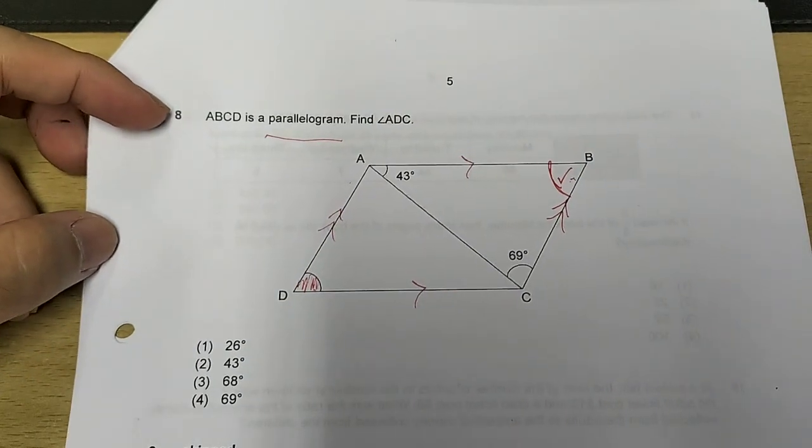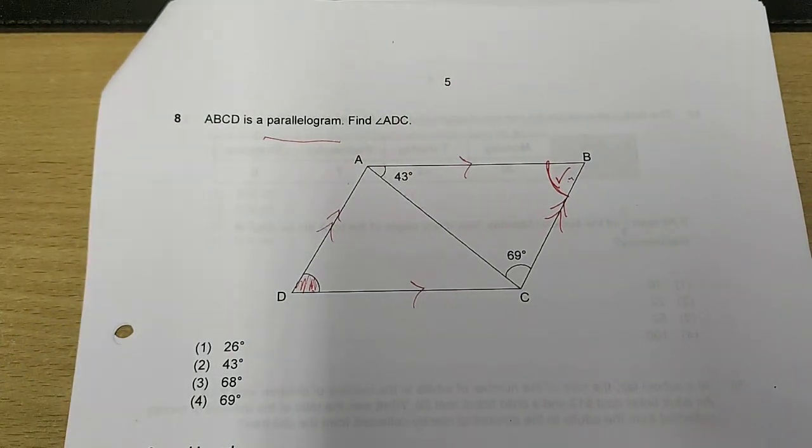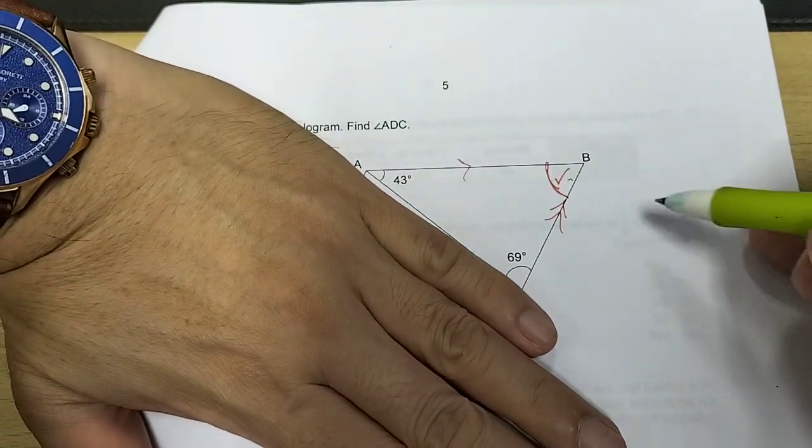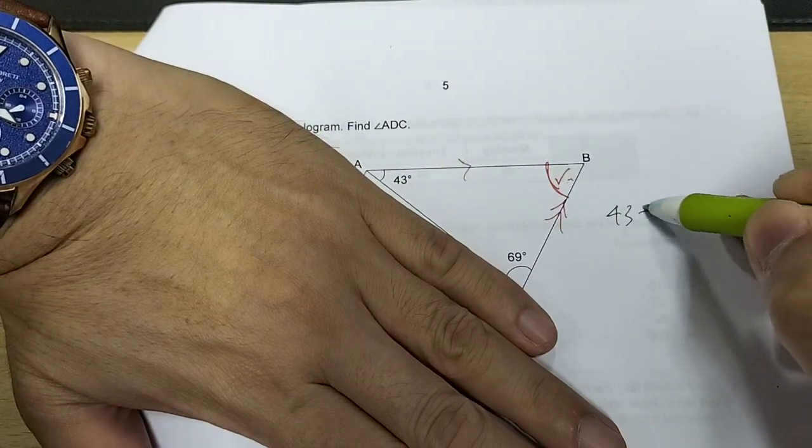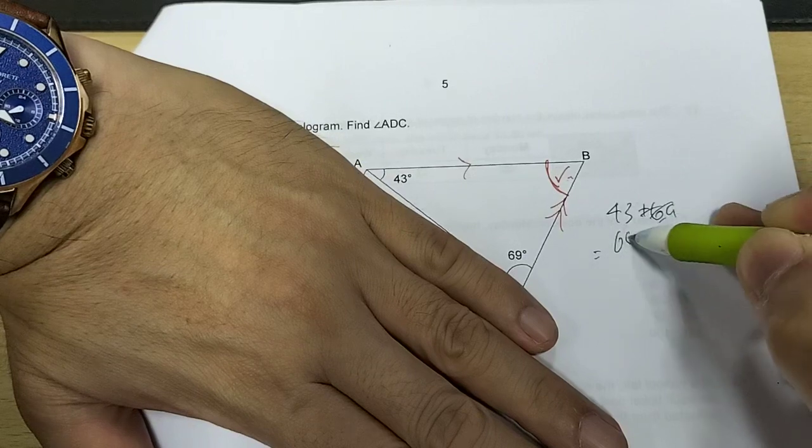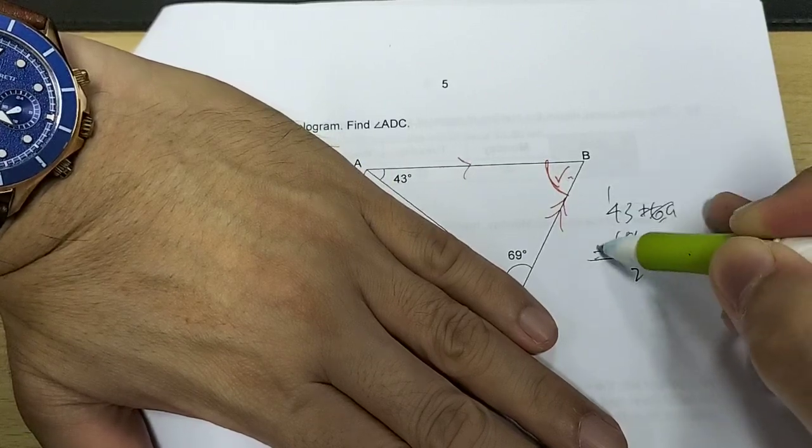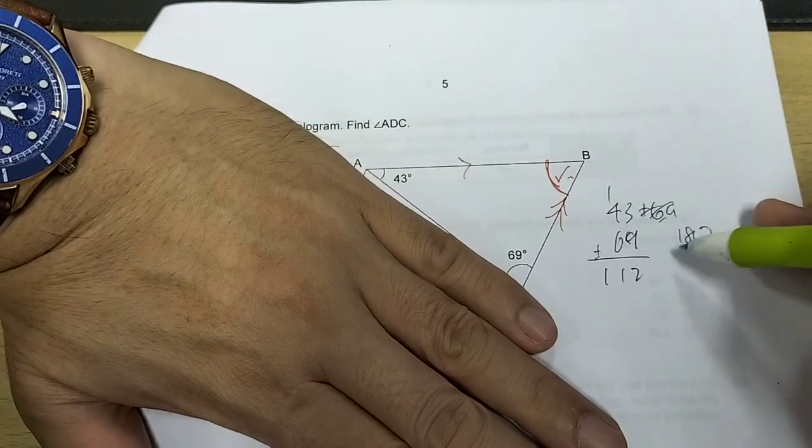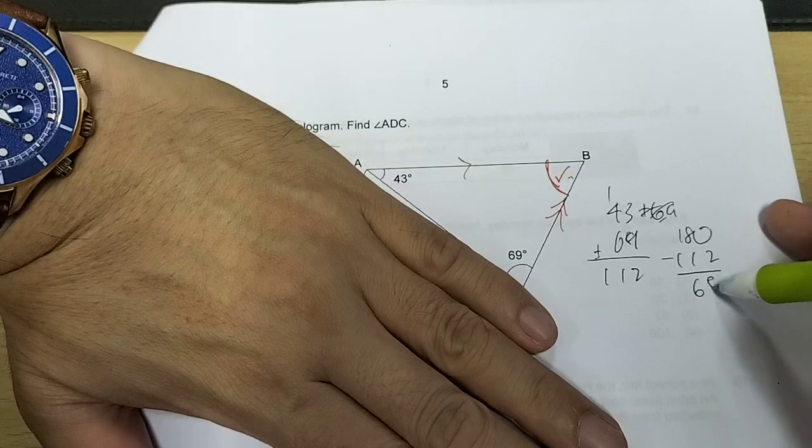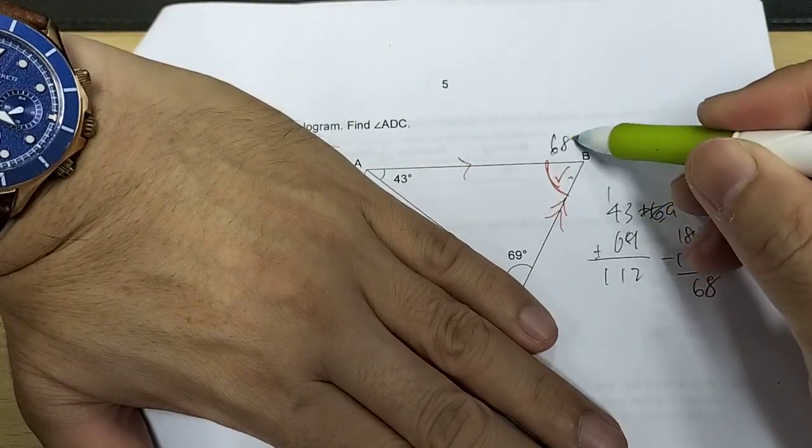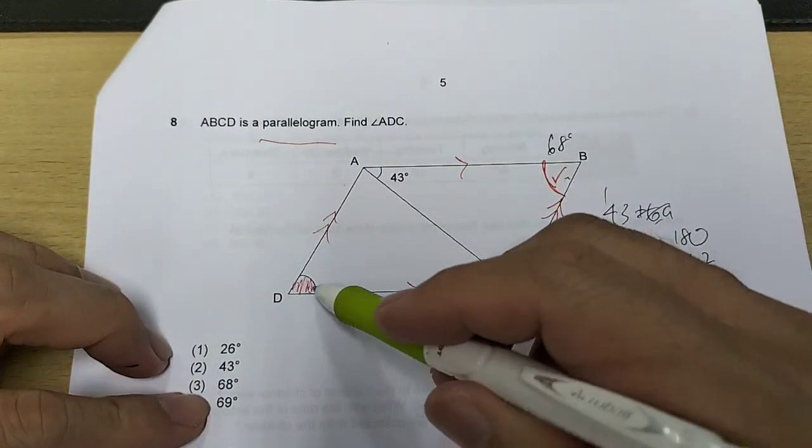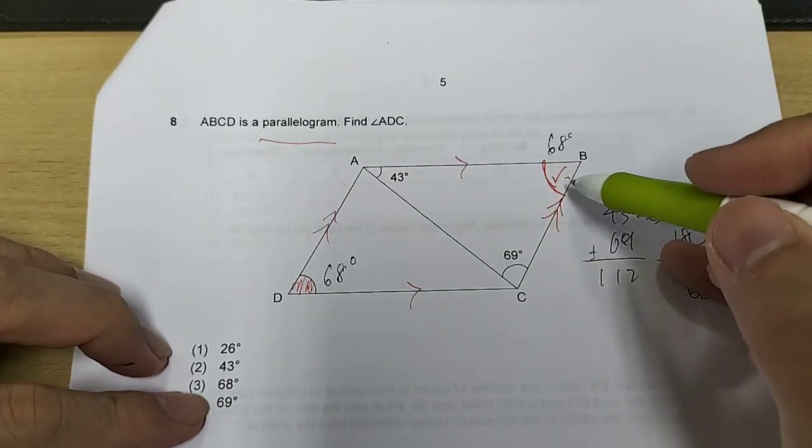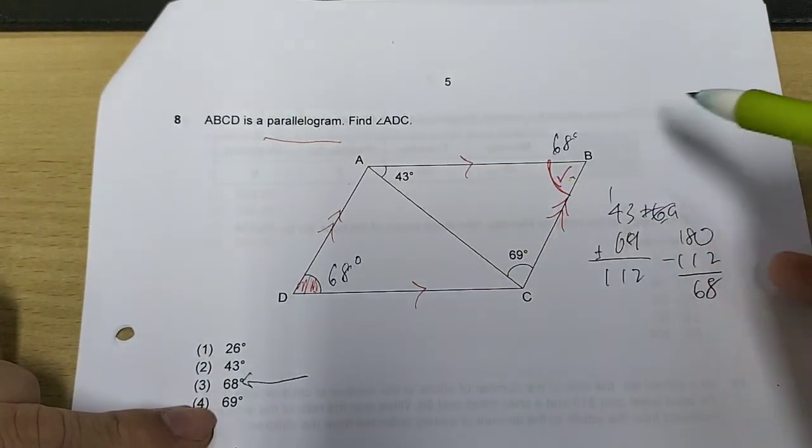How to find this angle? Well, let's use what we know. If I cover this, you'll see a triangle. I know the sum of the angle in the triangle is 180 degrees. Let's sum up these two angles first. 69 plus 43. I'll have 112. So I use 180 minus 112. I have 68 degrees. So this angle is 68 degrees. So the opposite angle of a parallelogram are equal. So 68 here. That's the answer.